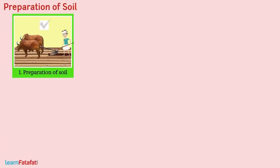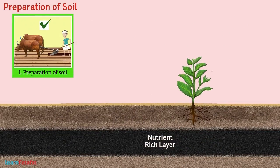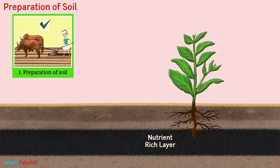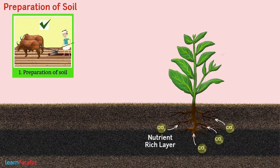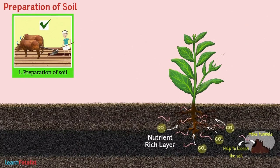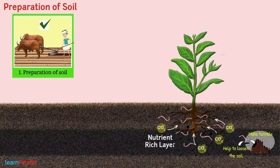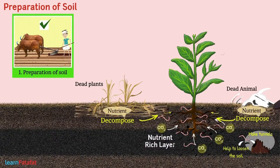Preparation of soil is necessary to bring the nutrient-rich layer to the top. It allows roots to go deep into the soil, and loosening also helps the roots to breathe easily. The loosened soil also helps earthworms and microbes present in the soil to grow. These organisms make tunnels and further help to loosen the soil.